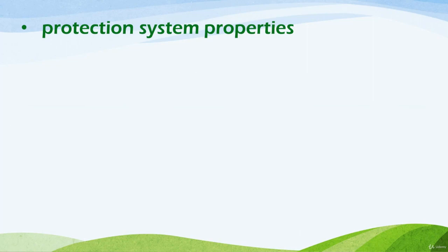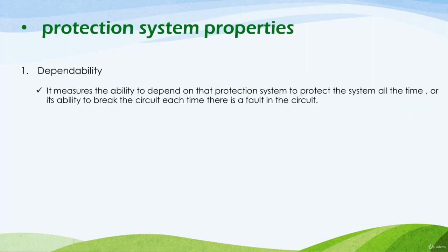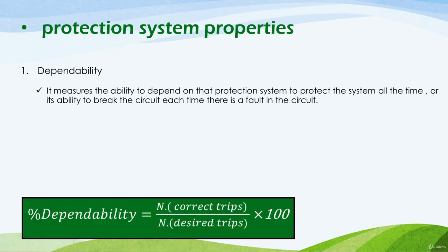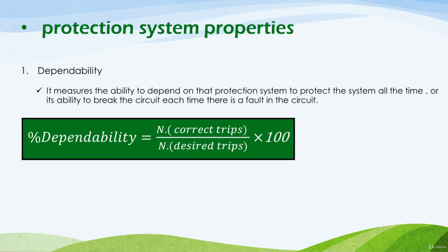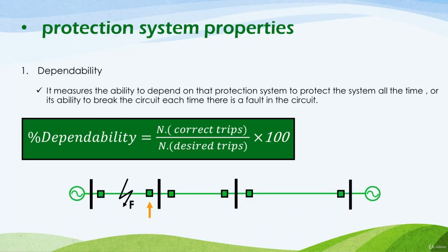Let's start with dependability. Dependability is the ability of the protection system to break the circuit whenever there is a fault. The measure is the number of times the system can clear the fault. It is expressed as a percentage: the number of correct trips when a true fault occurs, divided by the number of desired trips — that is, the total number of times there is a true fault and the circuit must be tripped.